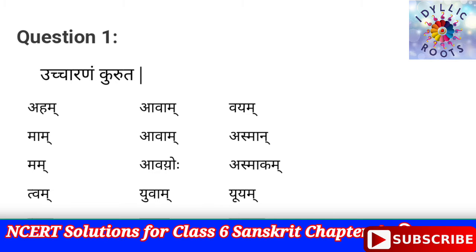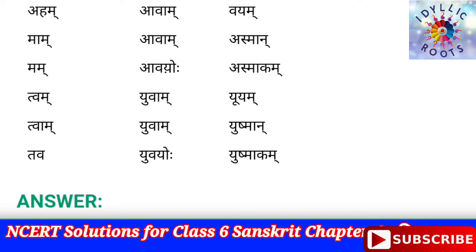तो चलिए एक बार और practice करते हैं — सीधे-सीधे पढ़ लेते हैं: अहम्, आवाम्, वयम्, माम्, आवाम्, अश्मान्, मम, आवयः, अश्माकम्, त्वम्, युवाम्, युवाम्, त्वाम्, युवाम्, युष्मान्, त्वा, युवोः, युष्माकम्।